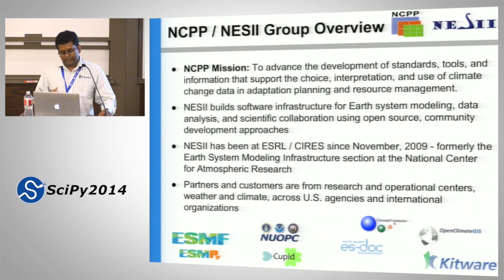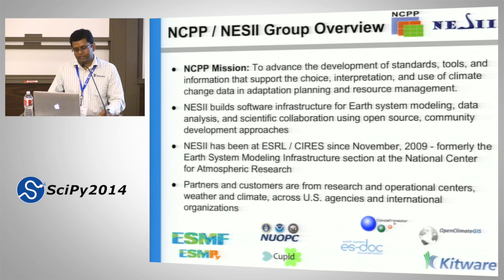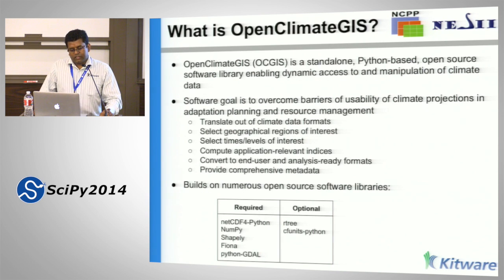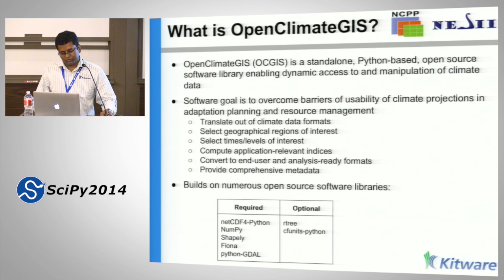Many of you may be familiar with NOAA and NCPP. The NCPP mission is to advance the development of standards, tools, and information that support the climate and weather community within NOAA. Open Climate GIS has been developed within the Python environment using tools like NumPy, NetCDF for Python, along with Shapely and Fiona for geometry processing and data writing, along with the Python-wrapped version of GDAL, and some optional utilities for specific things.